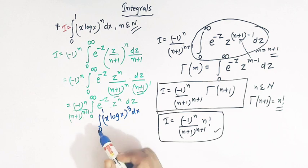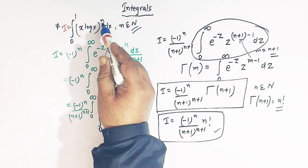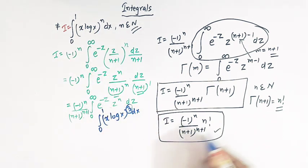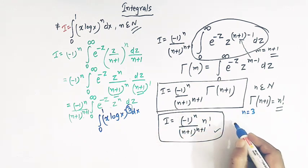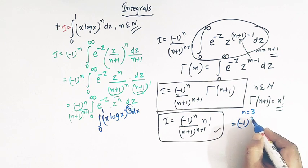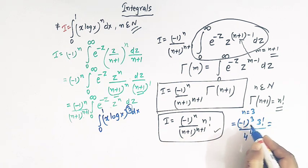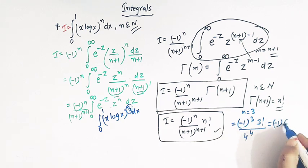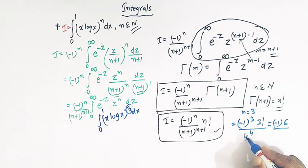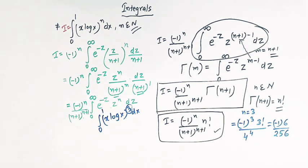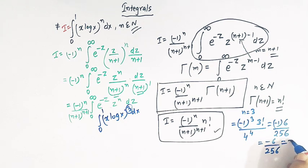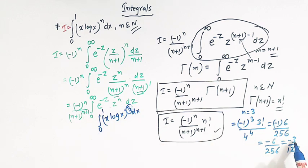Next, for the integral from 0 to 1 of x times (log x) raised to 3, comparing with the result gives n equals 3, which is a natural number. Substituting n equals 3: the value is (minus 1) raised to 3 times 3 factorial divided by (3+1) raised to (3+1), which is minus 1 times 6 divided by 4 raised to 4. Since 4 raised to 4 equals 256, this gives minus 6 over 256. Simplifying, the value of this integral is minus 3 divided by 128.